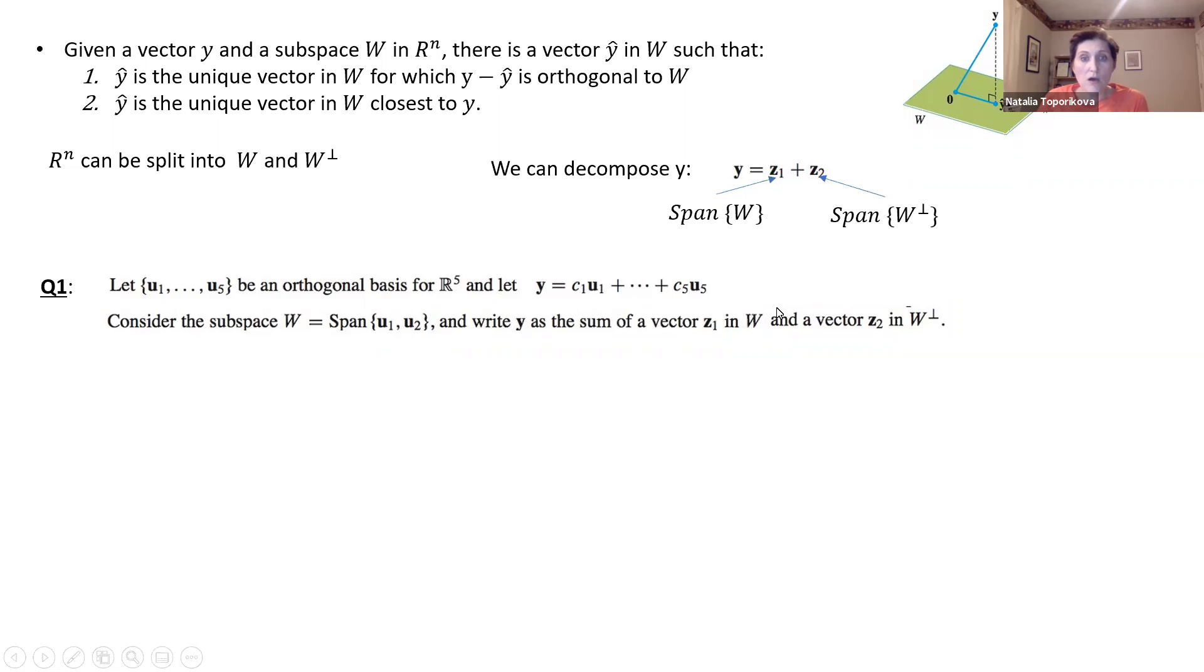So now let's consider the subspace W, which is spanned by the first two basis vectors, u1 and u2. So let's try to write down our vector y as the sum of two orthogonal components, z1 which belongs to the space W, and the second component z2 from the orthogonal subspace to W.